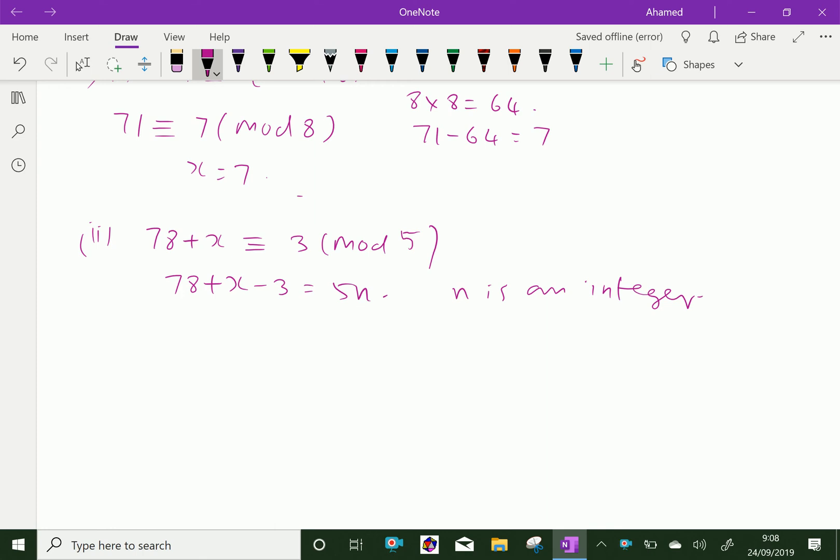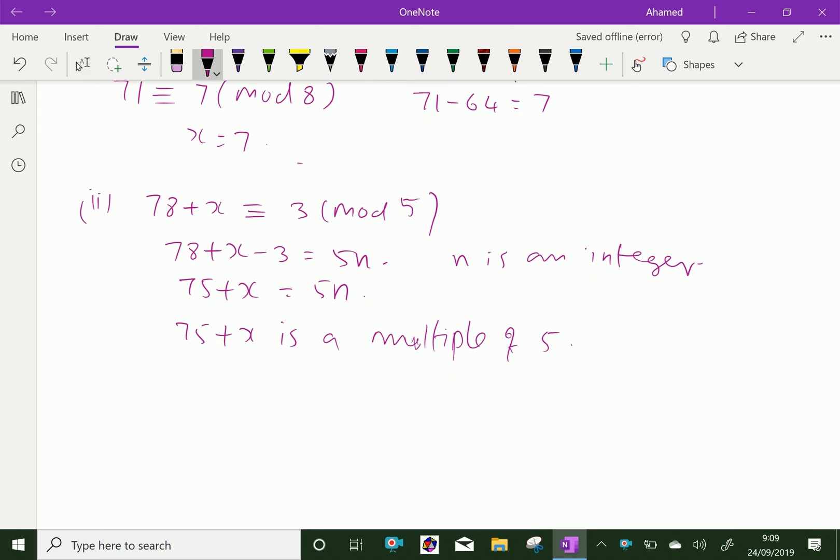Then, 78 minus 3 is 75 plus x equals 5n. Here, we can say 75 plus x is a multiple of 5. Therefore, the least value of x must be 5 to get another next multiple of 5. That is, 75 plus 5 is 80, which is a multiple of 5.